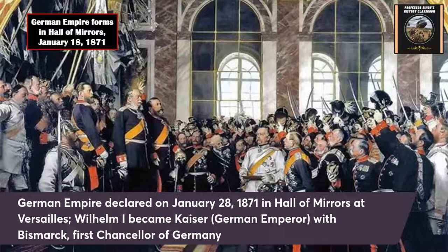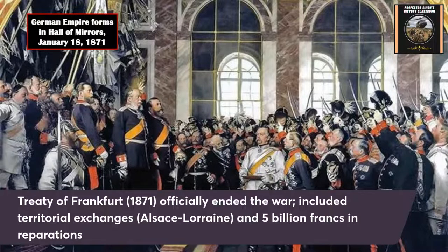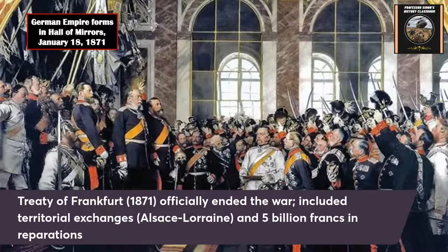From there, the German Empire formed. On January 18, 1871, Wilhelm became Kaiser — German Emperor. The German Empire, which the Germans call the Deutsches Reich, lasted from 1871 to 1918. There were three German emperors who reigned until World War I — Wilhelm II being the most famous. Bismarck became the first chancellor of Germany. A Treaty of Frankfurt officially ended the Franco-Prussian War. Germany got Alsace-Lorraine in the northeastern part of France, and the French had to pay five million in indemnity — essentially reparations. This sowed seeds of hatred between the French and Germans that continued into World War I and World War II.